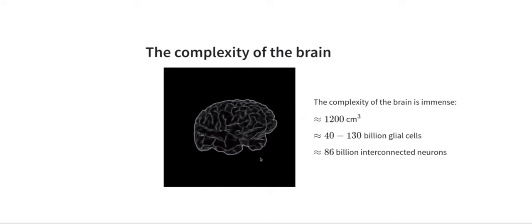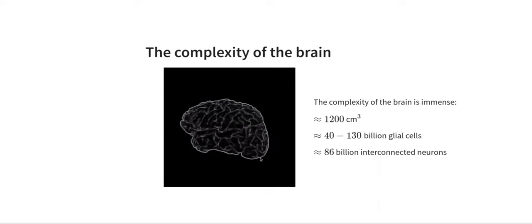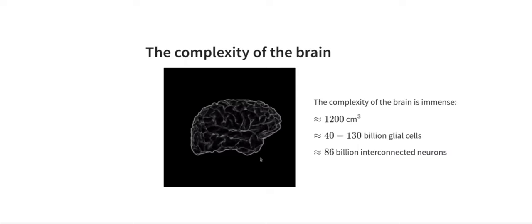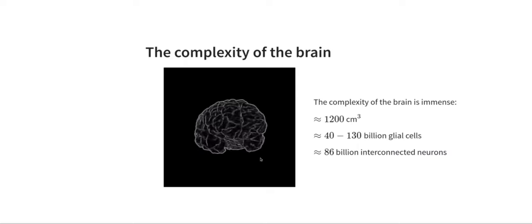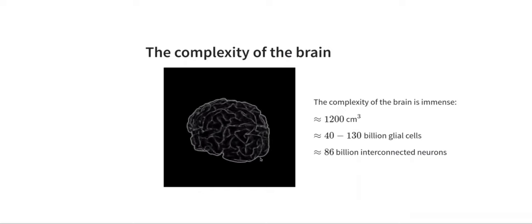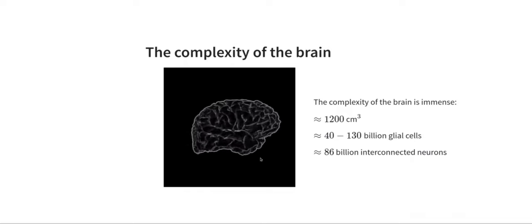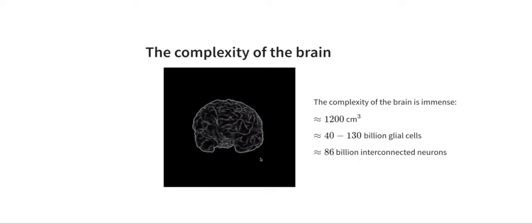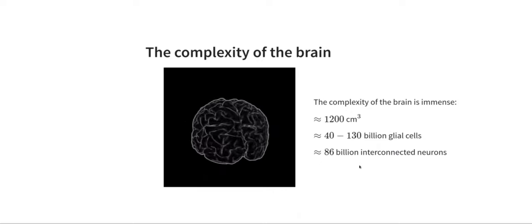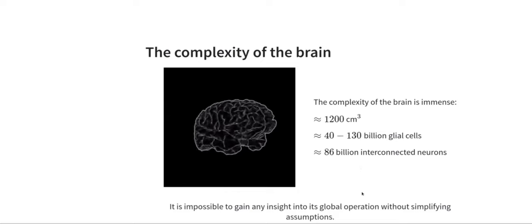The brain itself is a relatively small organ, about 1.2 liters in volume, but it contains an incredible 90 million interconnected neurons, supported by approximately 40 to 130 billion glial cells. It's a mind-bogglingly complex object. You could argue it's one of the most complex objects in the known universe. When we want to study it, we have a choice: either we look at very small units, for example individual neurons, or we can try to look at the global scale. But on the global scale we have to make certain assumptions, and it's impossible to gain any insight into the global operation without simplifying assumptions.